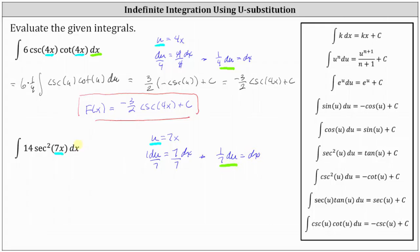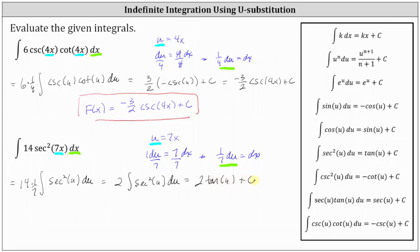If 1/7 du is equal to dx, we can replace dx with 1/7 du and have the integral only in terms of u. Factoring out the 14, we have the integral of secant squared u, and dx equals 1/7 du. Factoring out the 1/7 and simplifying, we have 2 times the integral of secant squared u du, which equals 2 times tangent u plus c. Writing the final result in terms of x by substituting 7x for u gives us 2 tangent of 7x plus c for the antiderivative. So F(x) equals 2 times the tangent of 7x plus c.